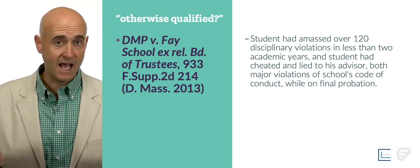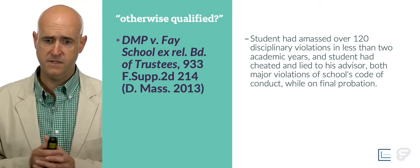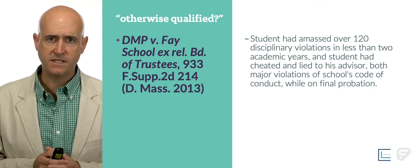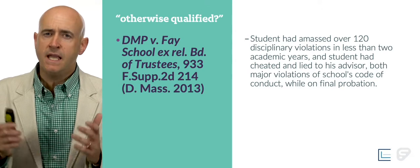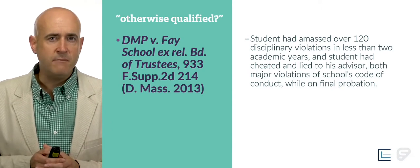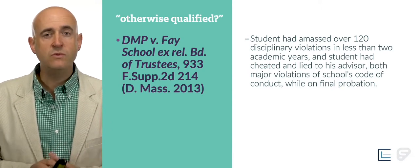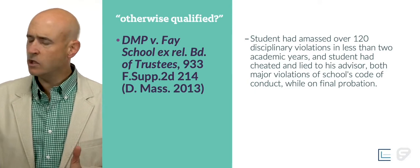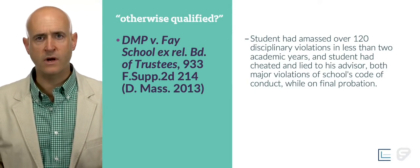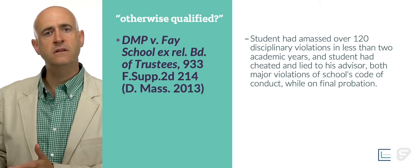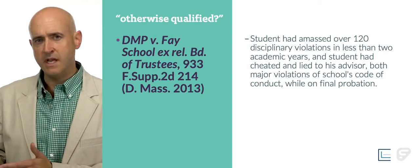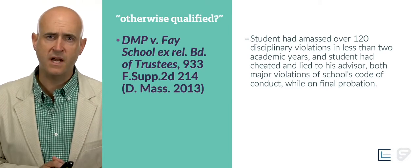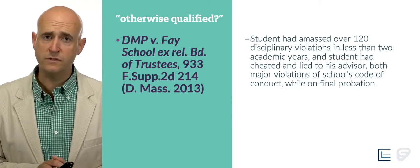The student had cheated and lied to his advisor — major violations of the school's code of conduct even while on final probation. That means the student was not otherwise qualified. We're not even going to look at the ADHD or the reasonableness of any accommodation because the student's own performance indicated he was not otherwise qualified to be at the school.